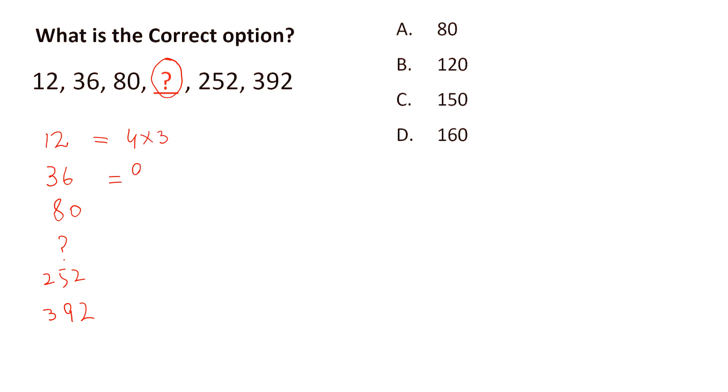Similarly, 36 is 9 multiplied by 4, and 80 is 5 multiplied by 16. This term is missing, so here it will be 6, then 7.